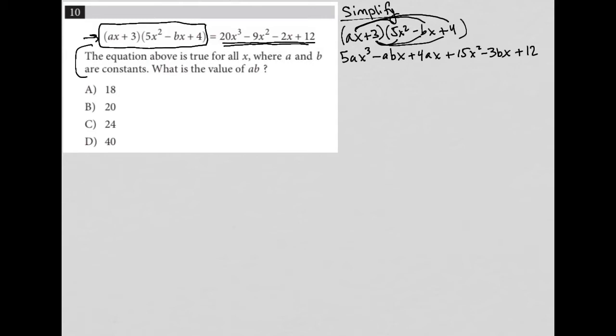Did I write something wrong here? AX. Oh, this should be negative ABX squared there. So I have my X cubed term.